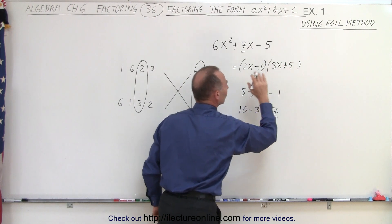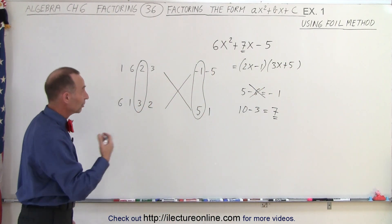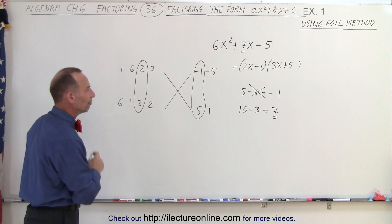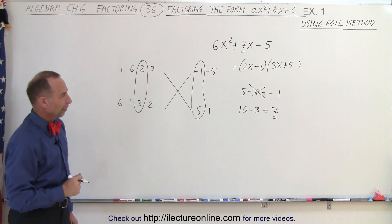And there again, we got the right factored form of that trinomial, and we got there pretty quickly, simply by using numerical combinations and the FOIL method. And that is how it's done, using the FOIL method.